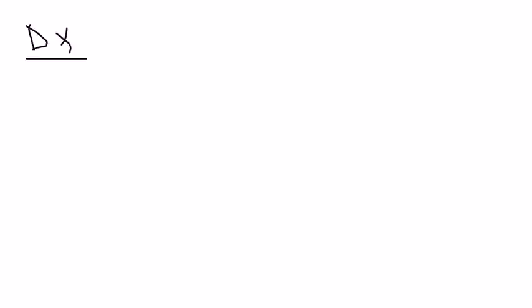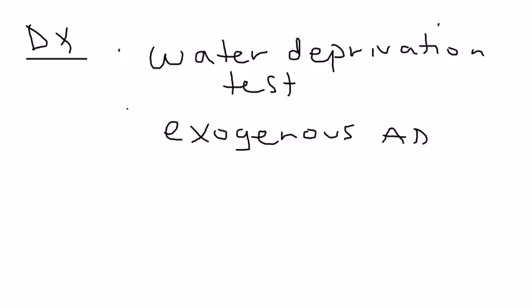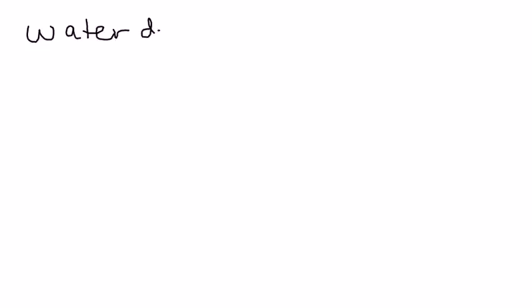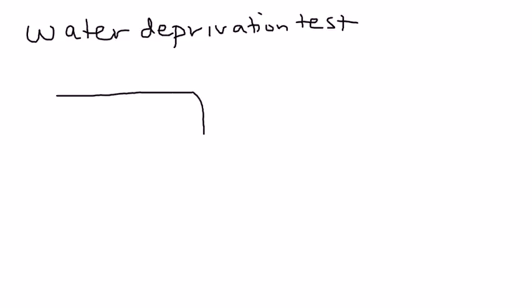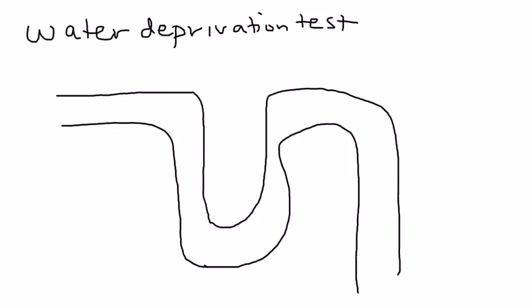How do you diagnose this? There is a very important test known as the water deprivation test. After this test, there's a second step, which is giving exogenous ADH. I'll explain with a diagram. Let's draw that nephron again — and this is, of course, the collecting duct.